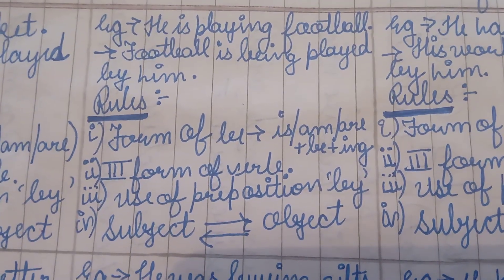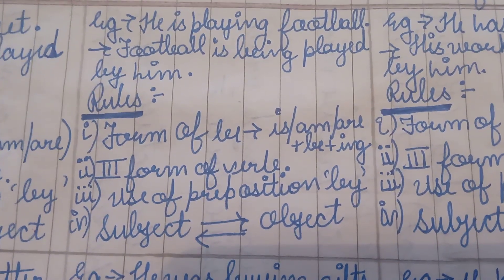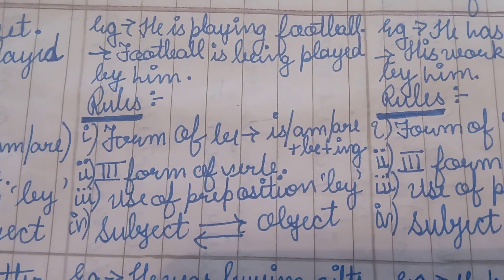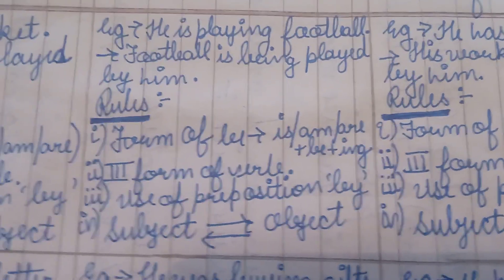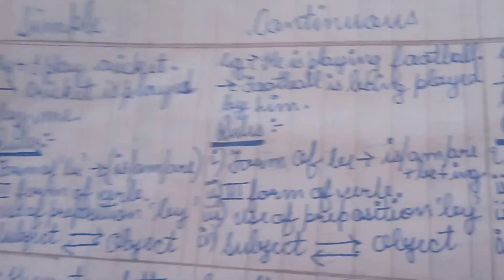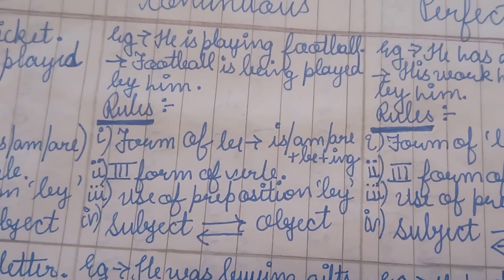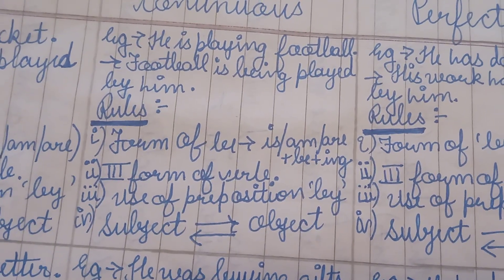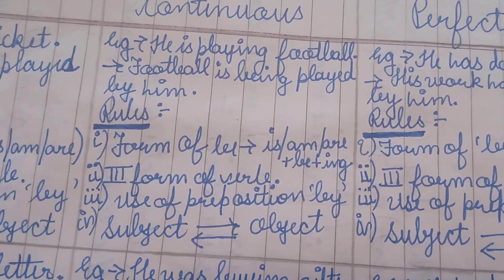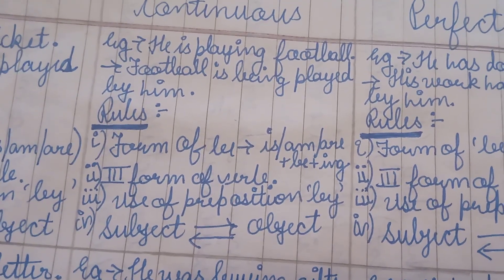Moving on to Present Continuous tense, with the example: 'He is playing football.' Bringing 'football' to the subject position, we use 'is being' as the form of 'be' — because in continuous tenses we add 'being' alongside 'is' or 'are.' So the passive is: 'Football is being played by him.' The rule is: form of be (is/are) plus 'being,' then third form of verb, then preposition 'by,' then subject-object change.